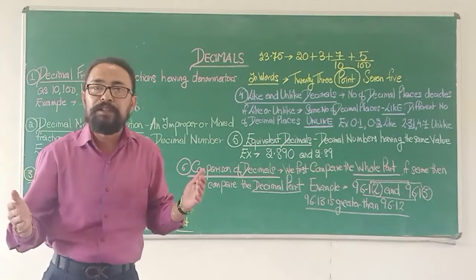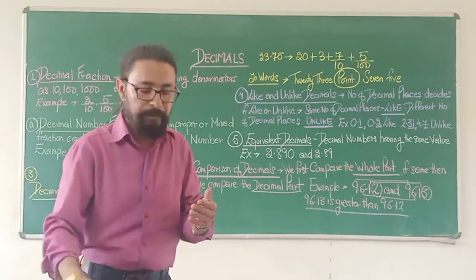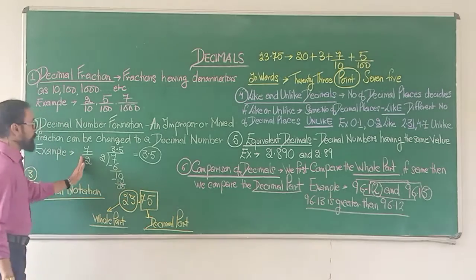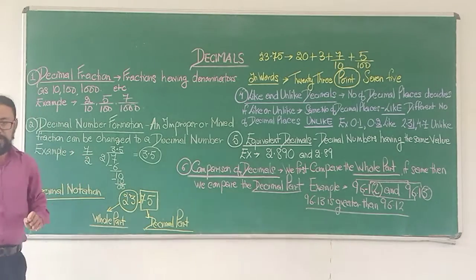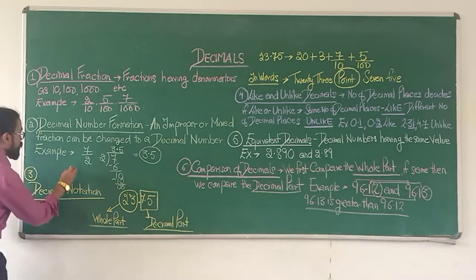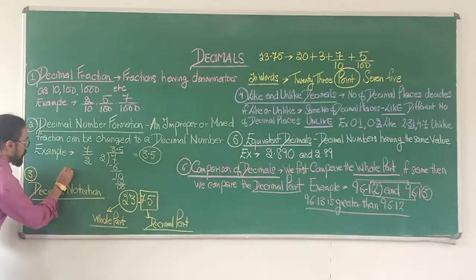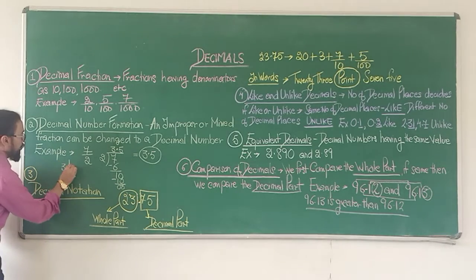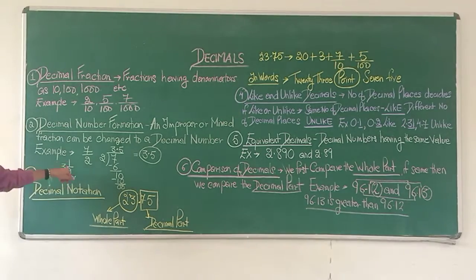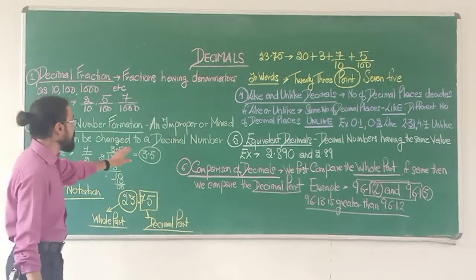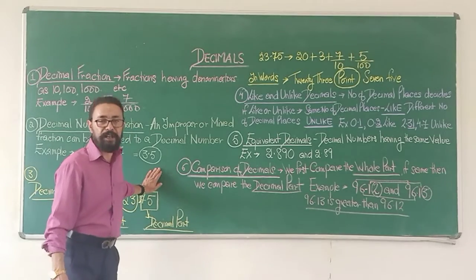What does 3.5 mean? 3 and a half. If you look at 7 upon 2 and change it to a mixed fraction: 2 goes into 7 three times, remainder 1. I get 3 and 1/2, that is 3 and a half. And 3 and a half is the same as 3.5.